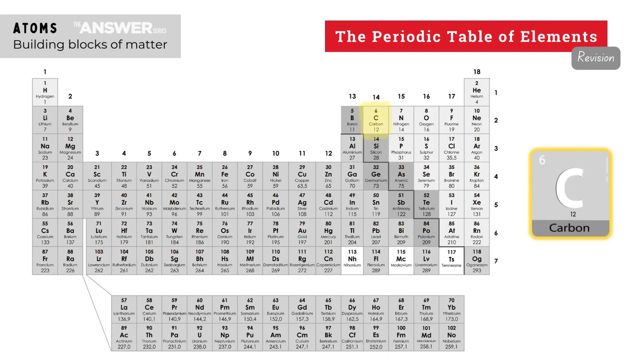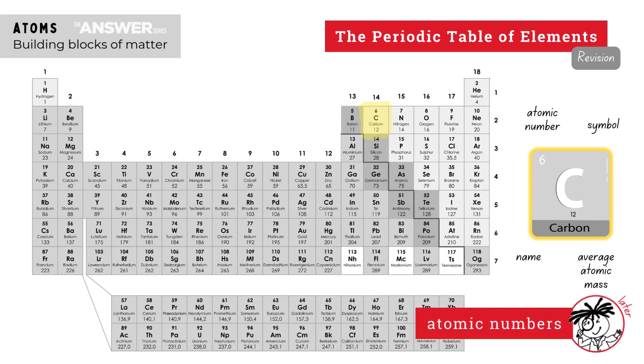Each element is represented by a block which contains the element's atomic number, symbol, name, and average atomic mass. Atomic numbers are explained in more detail in a later video.